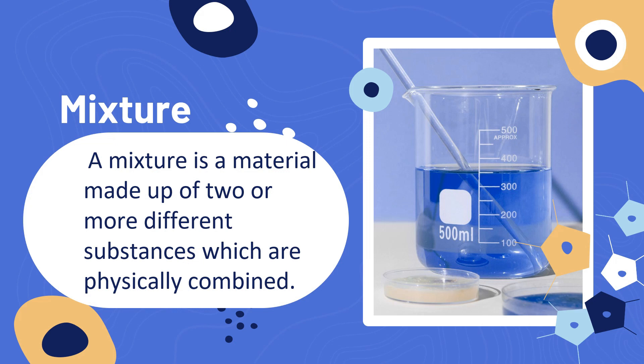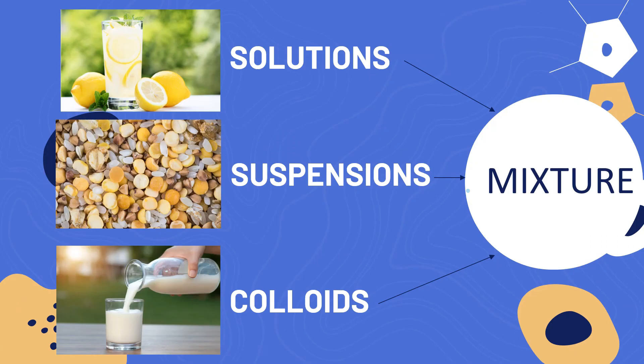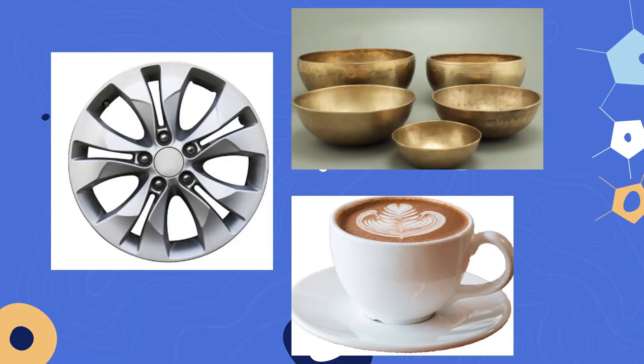Now let's start with a mixture. What is a mixture? A mixture is a material made up of two or more different substances which are physically combined. It is the physical combination of two or more substances in which the identities are retained, and they are mixed in the form of solutions, suspensions, and colloids. Sometimes when solid materials are mixed with other solids, or when liquid materials are mixed with other liquids, each of the combined materials cannot be distinguished from each other anymore.